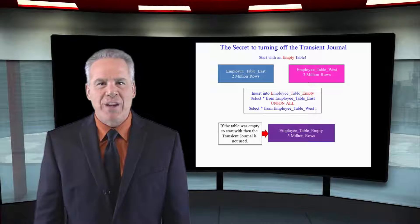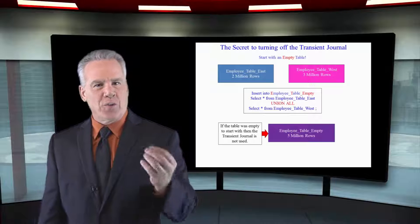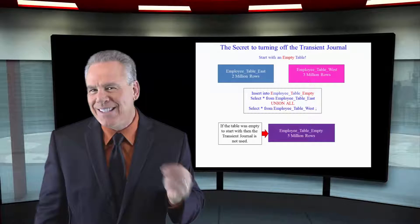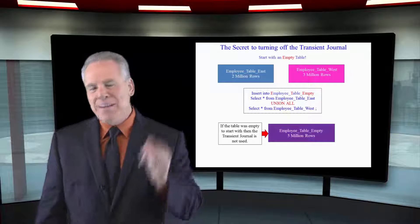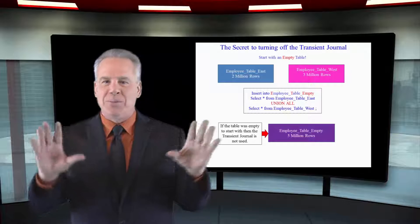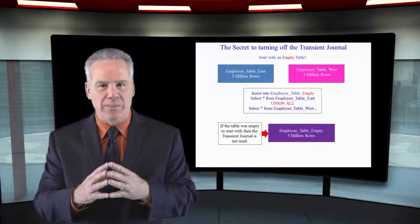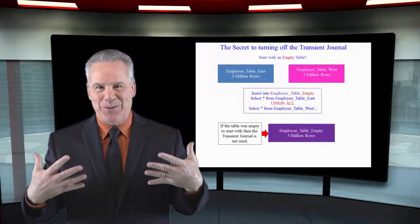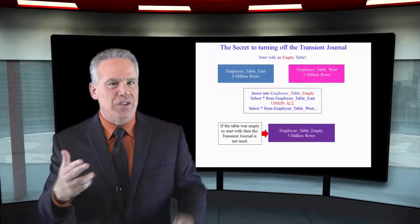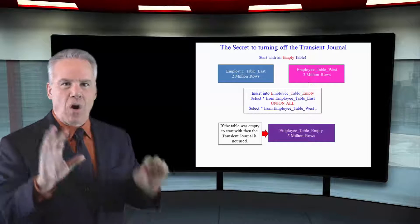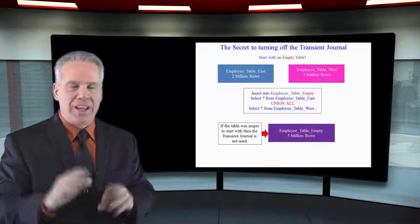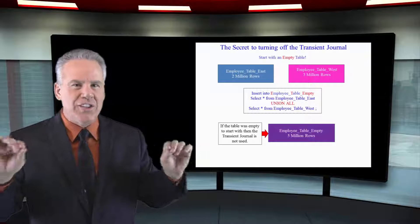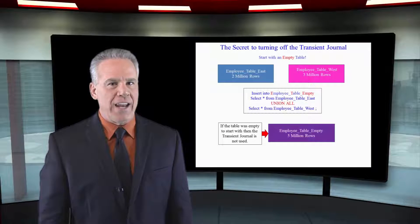Where does the space come from for the Transient Journal? From user DBC. DBC holds all the system catalog tables, and DBC the user is responsible for all the space in any Transient Journal, because that's a system task that is automatic.